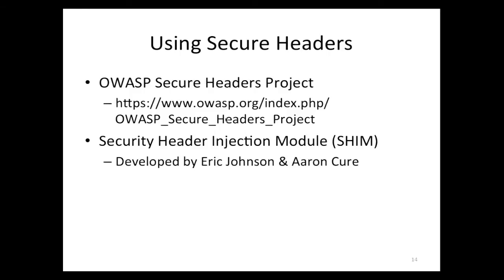So, using secure headers — we've talked about a number of different headers: content security policy, strict transport security, X-Frame-Options. HTTP only is an addition to the set-cookie header. This brings us to the next OWASP project: the OWASP Secure Headers Project, with support for different languages — .NET, Java, as well as Ruby. It's got some code that will let you automatically apply these headers to various parts of your application. There's also something called the Security Header Injection Module, or SHIM, developed by Eric Johnson and Aaron Kure. They're going to be giving a talk today at 3 o'clock about SHIM and plans to contribute it back to the OWASP Secure Headers Project.